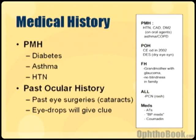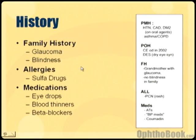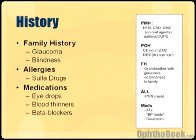For medical history, we concentrate on diabetes since it causes problems in the back of the eye, asthma because we give many patients beta blocker eye drops for pressure, and hypertension because it also causes problems in the back of the eye. For past ocular history, ask about all past eye surgeries — be sure to ask about cataract operations, since many patients don't consider that a surgery. Ask what eye drops they're using as a clue to what they're being treated for. Family history focuses on glaucoma and blindness. For allergies, focus on sulfa drugs since some pressure-lowering drops are sulfa-based. For medications, ask about eye drops, blood thinners before surgery, and oral beta blockers.